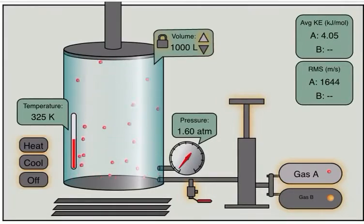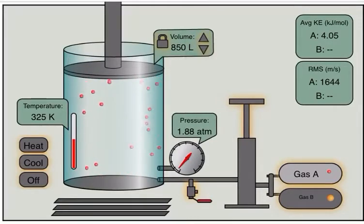We want to prove that as volume decreases, the pressure will increase. So we're going to start now and decrease the volume a bit. You can see the volume was a thousand, we decreased it to 850, and the pressure increased from 1.6 to 1.88 atm.